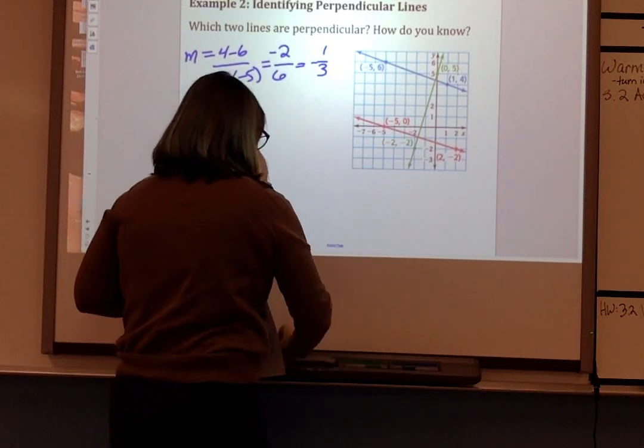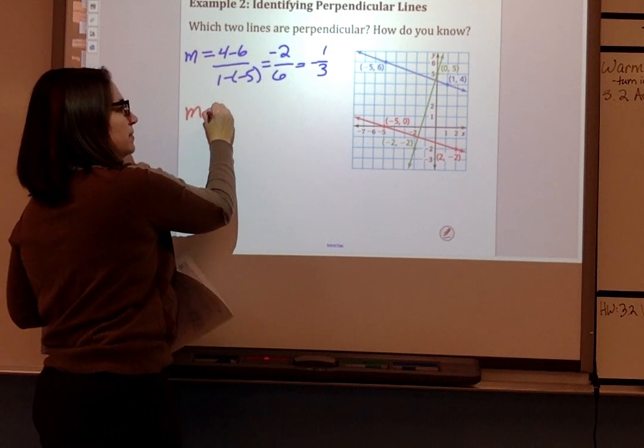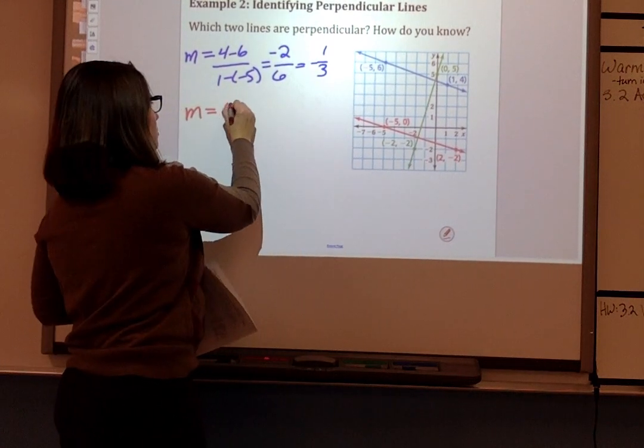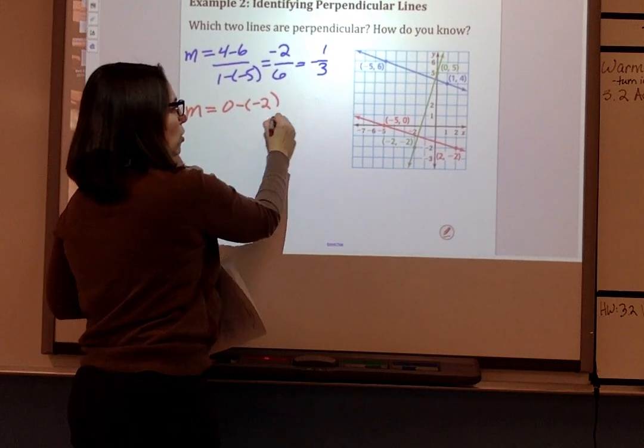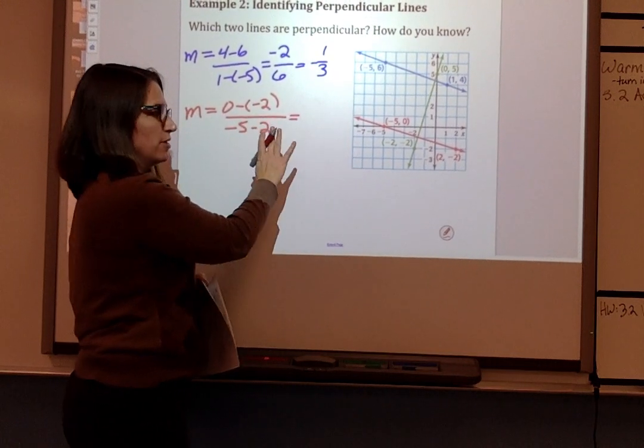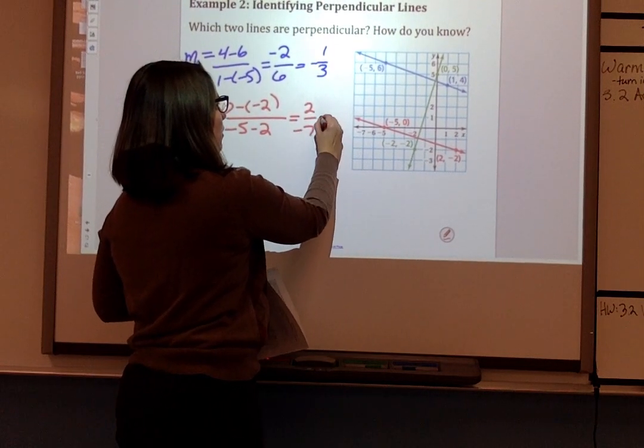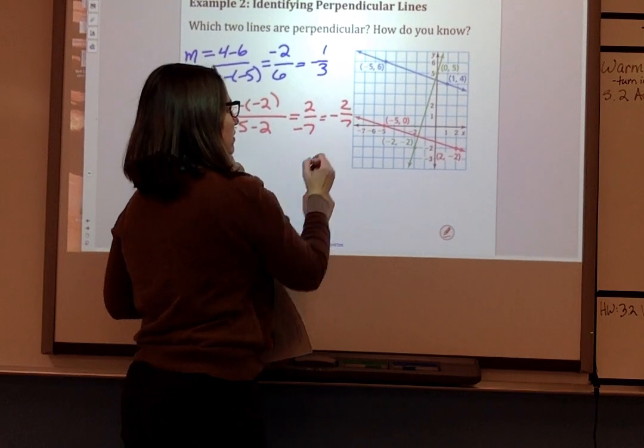And let's do the red line next, the other negative slope. So that would be 0 minus negative 2 all over negative 5 minus 2. It's starting to bounce there, sorry about that. So we get 2 over negative 7 or negative 2 7ths.